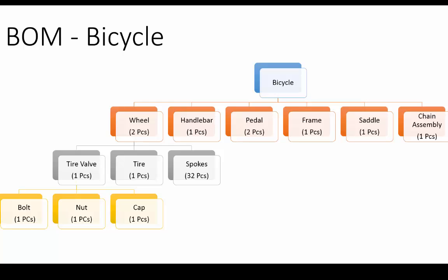Notice that BOM also specifies the quantity in which each of these components are required. For example, two pieces of wheels, two pieces of pedals, one piece of handlebar, and so on. Each item that must be financially accounted for in inventory or in the costing phase must be included in the BOM. The level of detail is determined by the company's production and accounting needs. For example, items such as nuts, bolts, screws, and nails are frequently not included in BOMs because the cost of tracking these items is higher than their actual values.